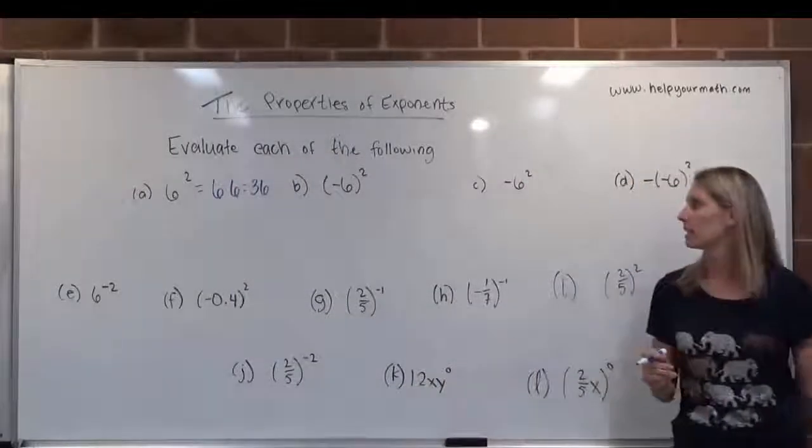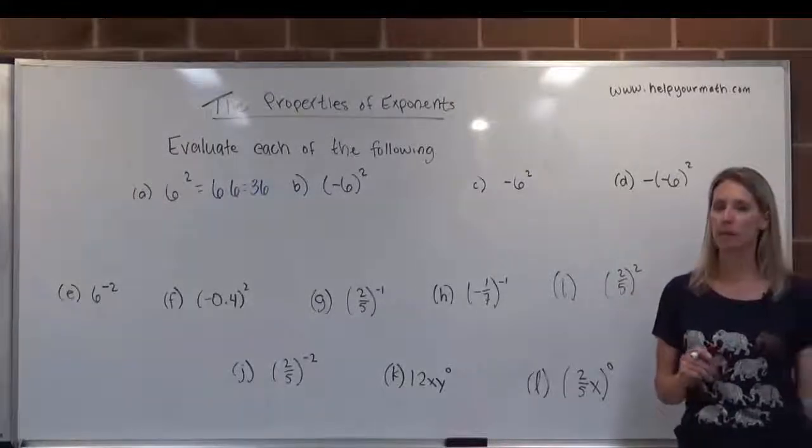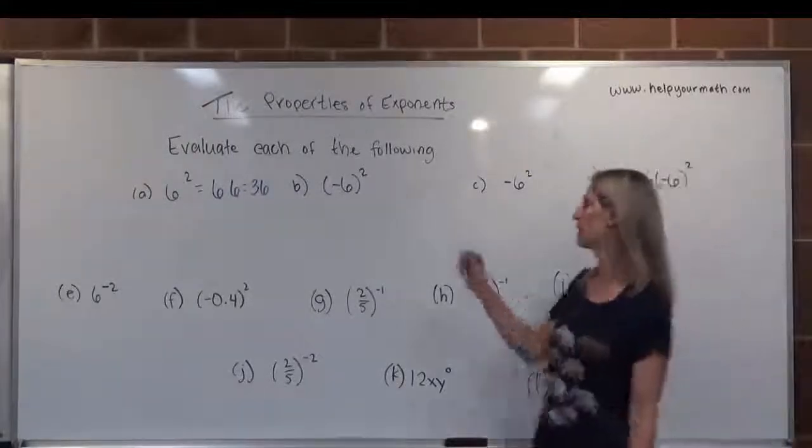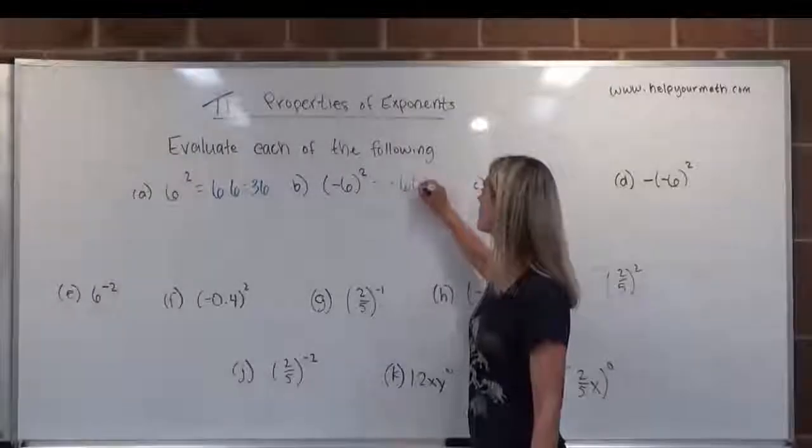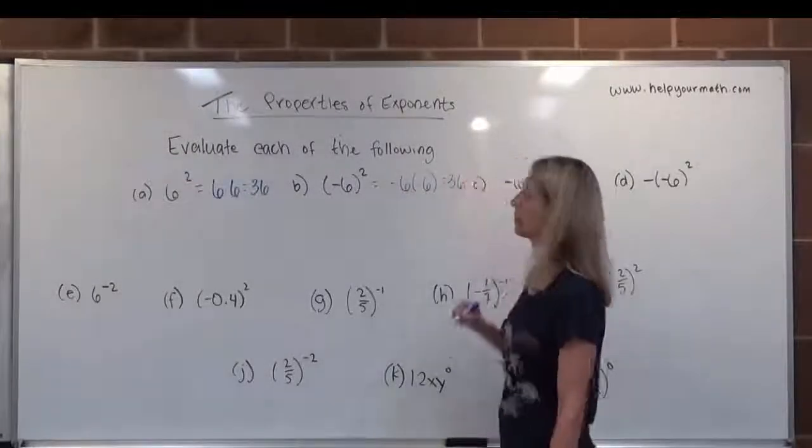In letter B, we have negative 6 quantity squared. That means we want to write the base of negative 6 twice, which would be negative 6 times negative 6, which would also be 36.